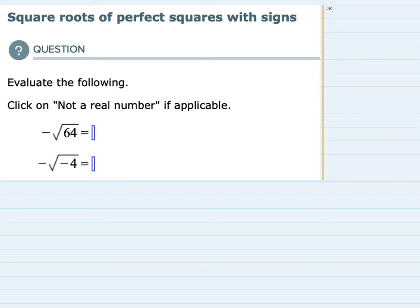We're asked to evaluate two expressions and we are told that there is a possibility here that it's not going to be a real number and that we could choose that. So I'm going to give myself a little room here and rewrite things.